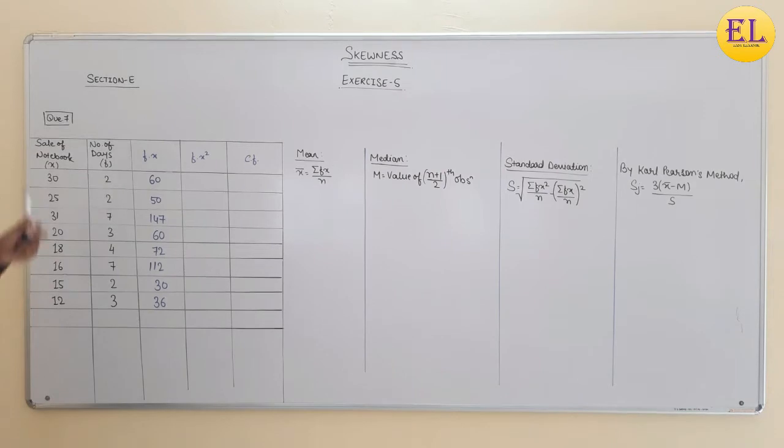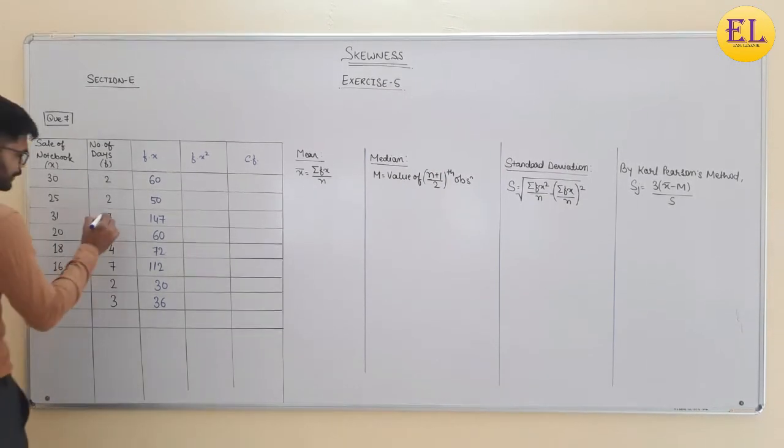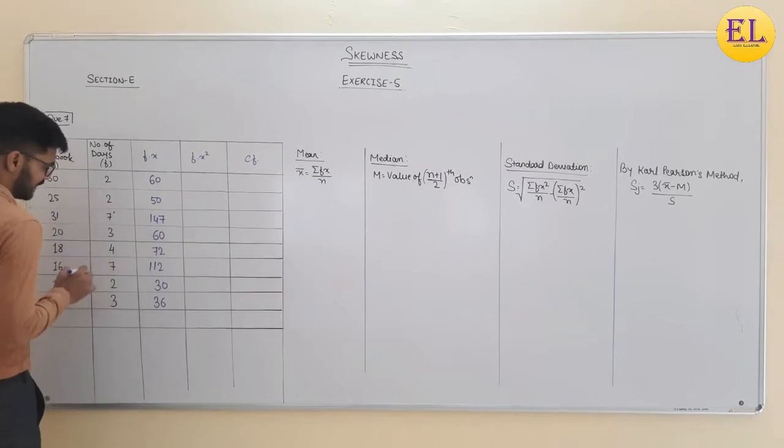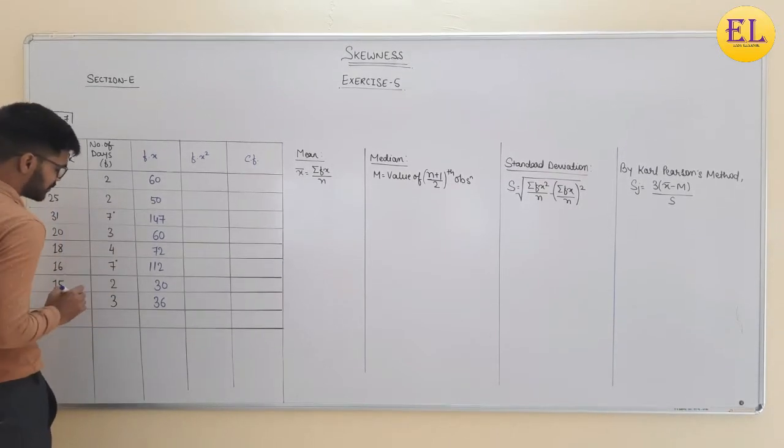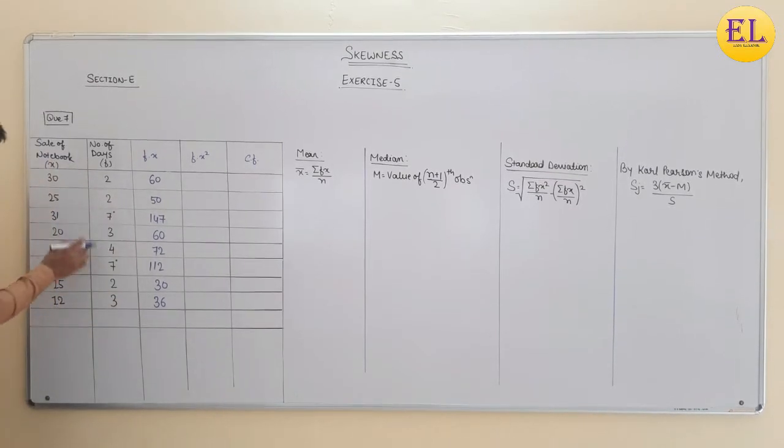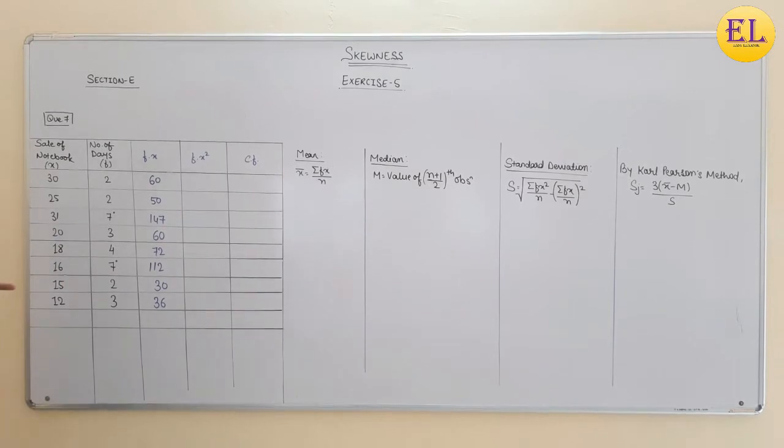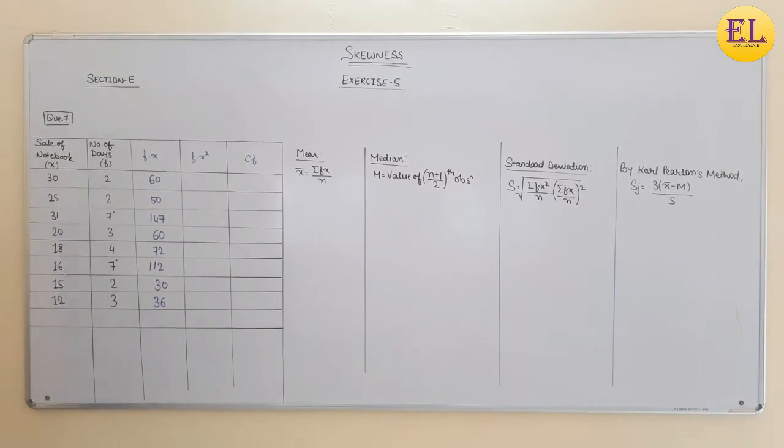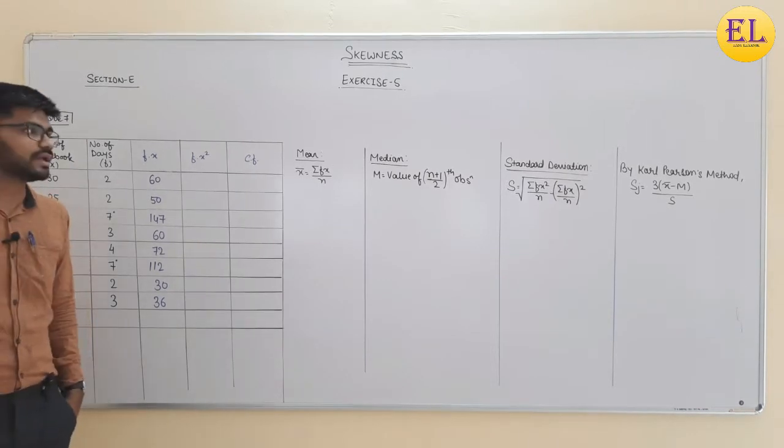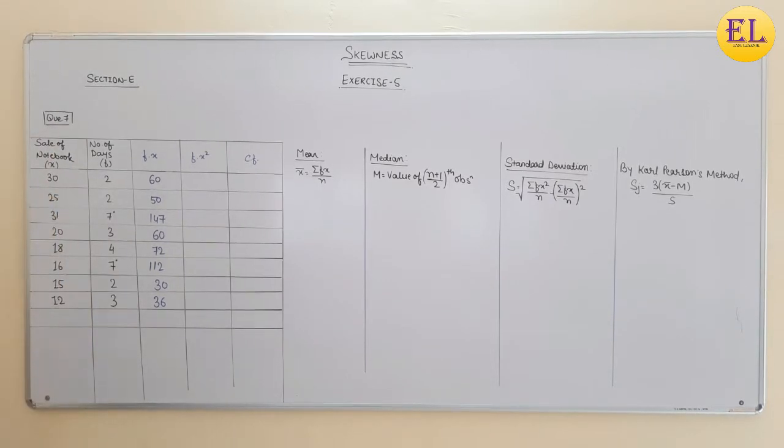Why we are using median here? Because here, 7 is the highest frequency and it is occurring twice. That means the mode is repeat twice. So here we will not find the mode, which means that the mode is undefined. And for that, we are using median here to get the answer.